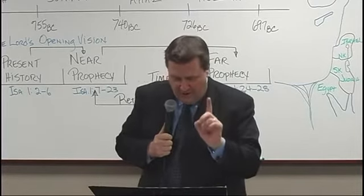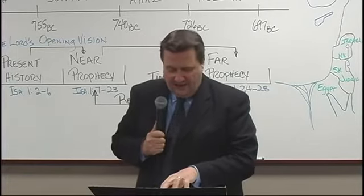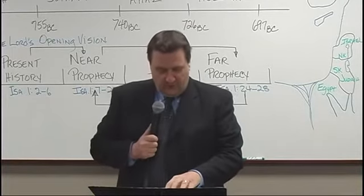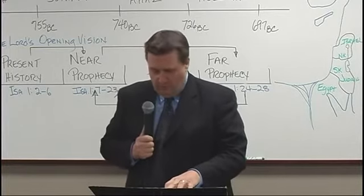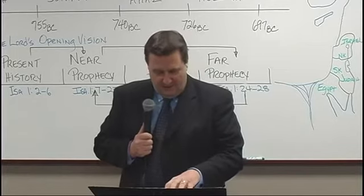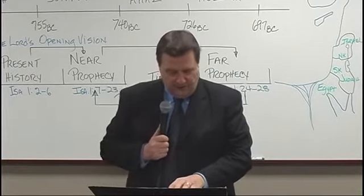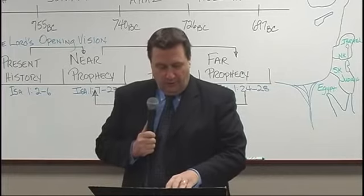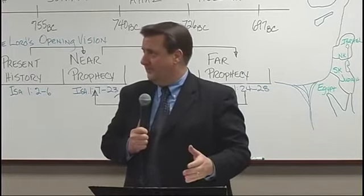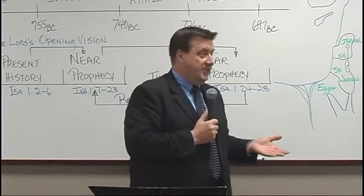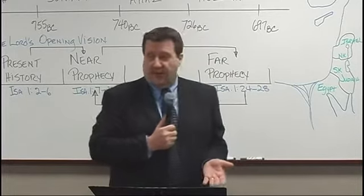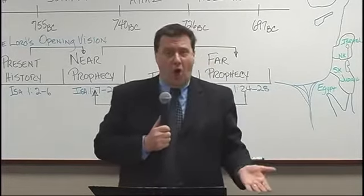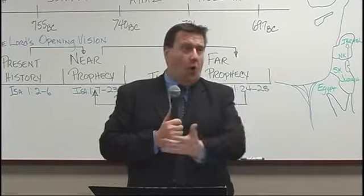Still in the near prophecy, verse 9: 'Unless the Lord of hosts had left us a few survivors, we would be like Sodom and we would be like Gomorrah. Hear the word of the Lord, you rulers of Sodom. Give ear to the instruction of our God, you people of Gomorrah. What are your multitude of sacrifices to me, says the Lord? I have had enough of burnt offerings of rams and the fat of fed cattle. I take no pleasure in the blood of bulls, lambs, and goats.' Well, wait — this is his instruction. He says, 'I don't like these sacrifices anymore that you're bringing, northern kingdom. I don't like the offerings you are bringing to me. You are like Sodom and you are like Gomorrah.'